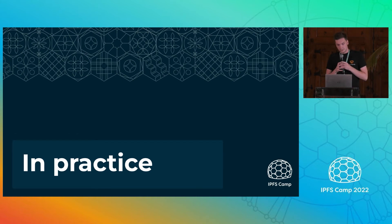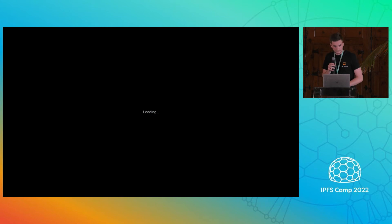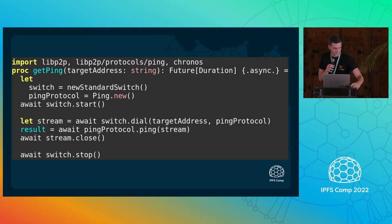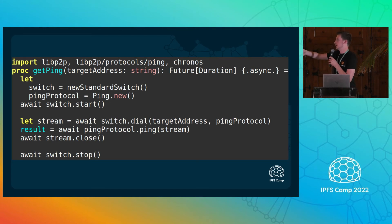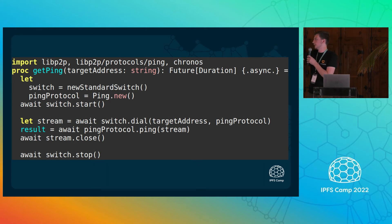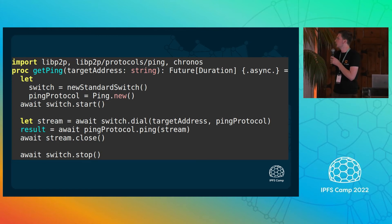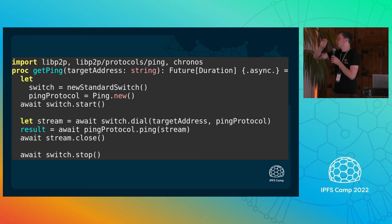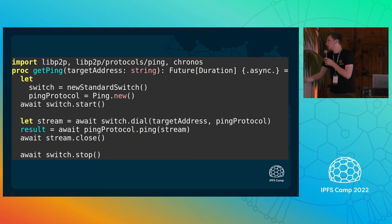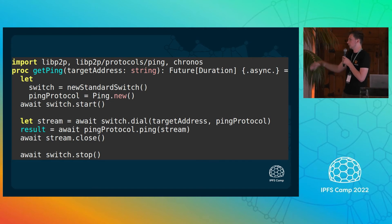So how does it look in practice to use NimLibP2P? This is a very simple NimLibP2P example — it's like the hello world of LibP2P: pinging someone, getting the ping. We start by importing LibP2P, the ping protocol, and Chronos — Chronos is our asynchronous framework at Status. Then we create a procedure which takes a string and returns a future of a duration. This procedure is async. I create a switch, create a protocol, start my switch, dial the peer with the ping protocol, assign the ping to the result variable, and close everything down.